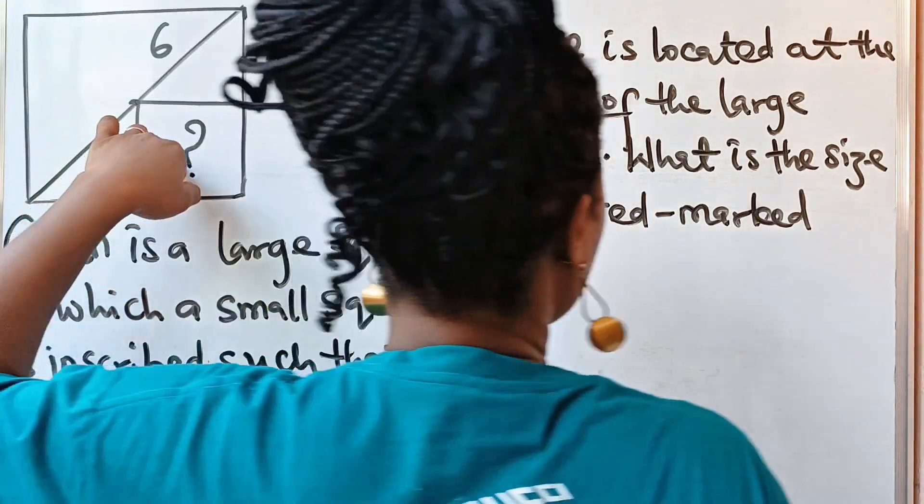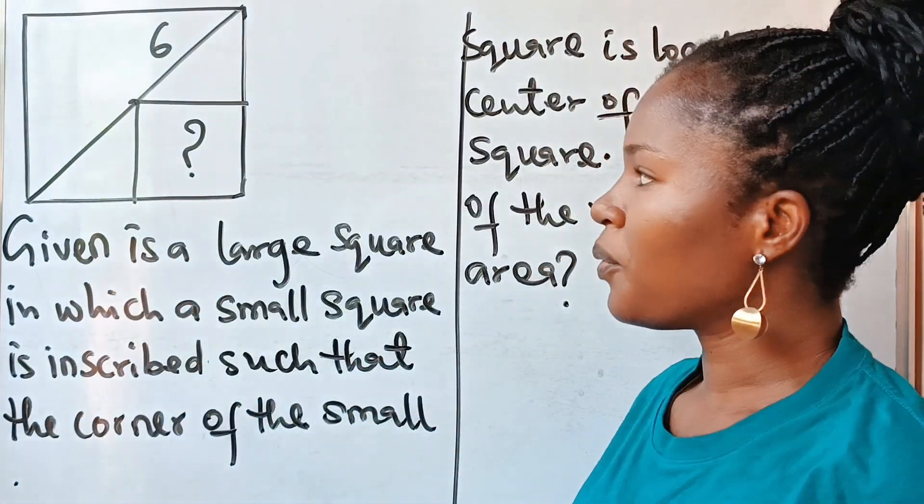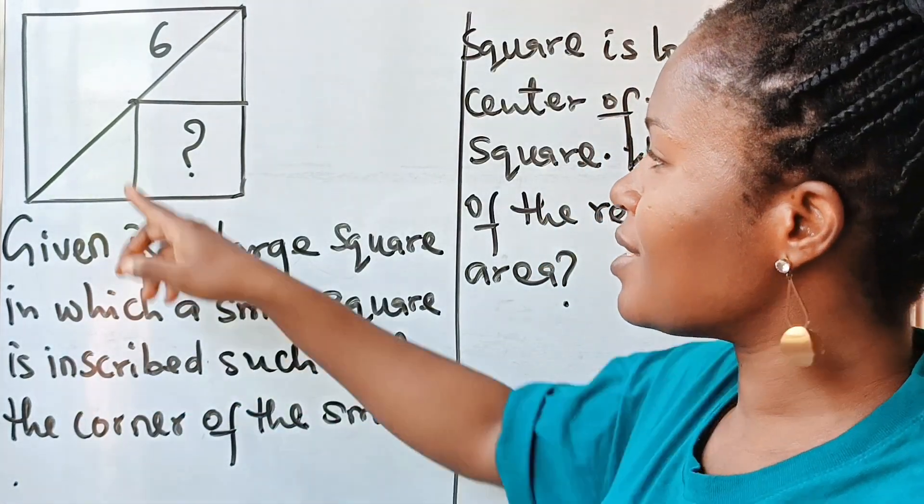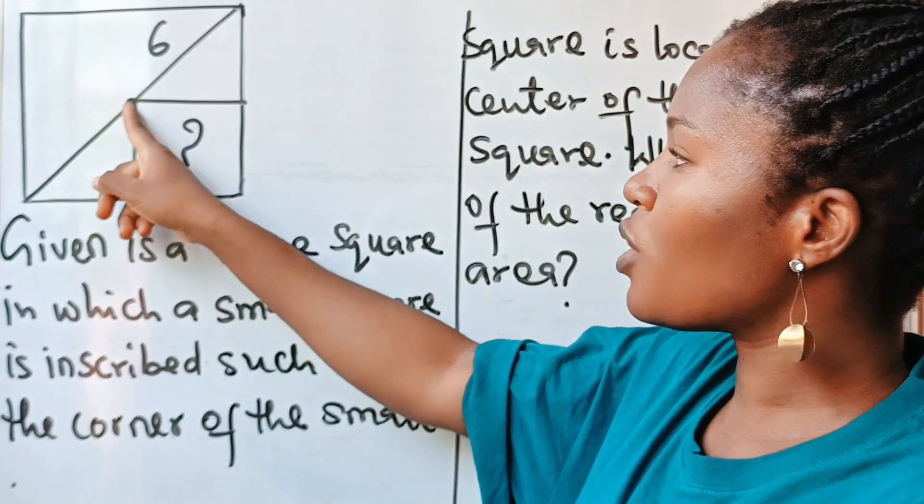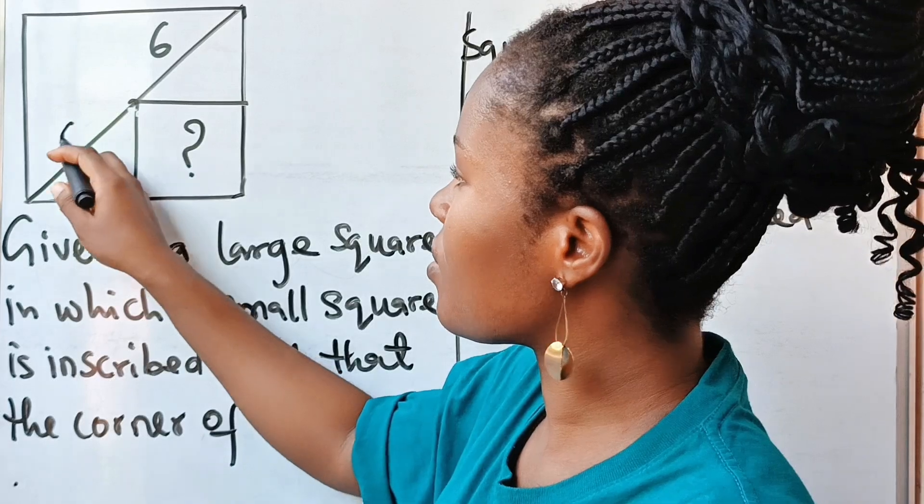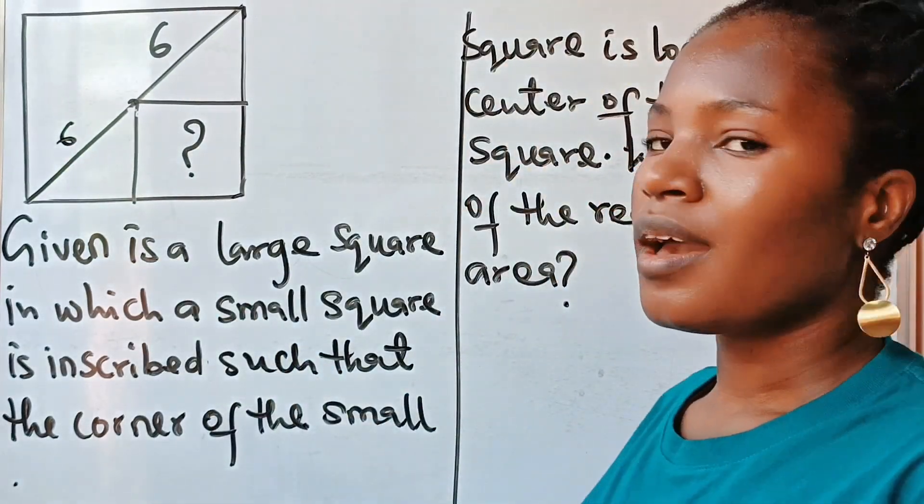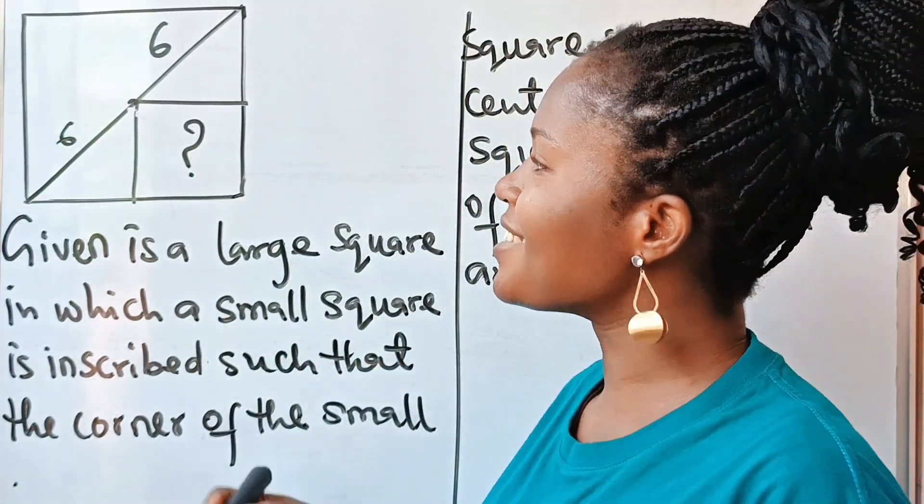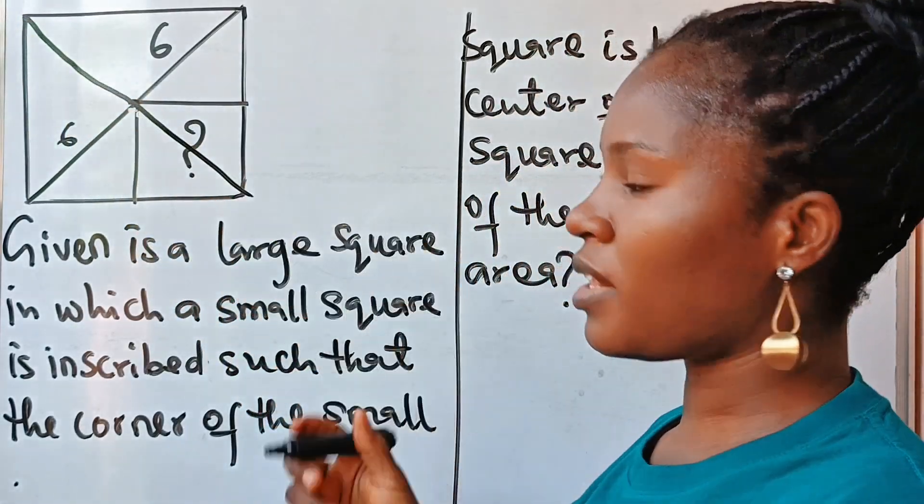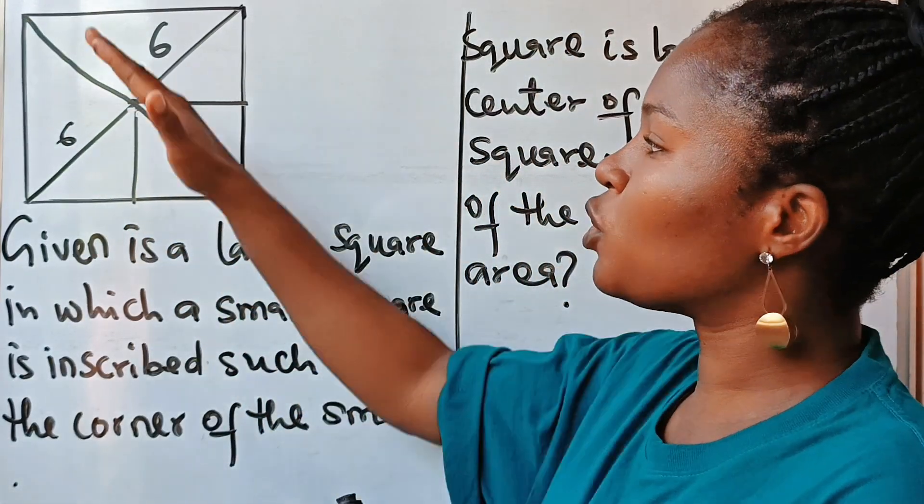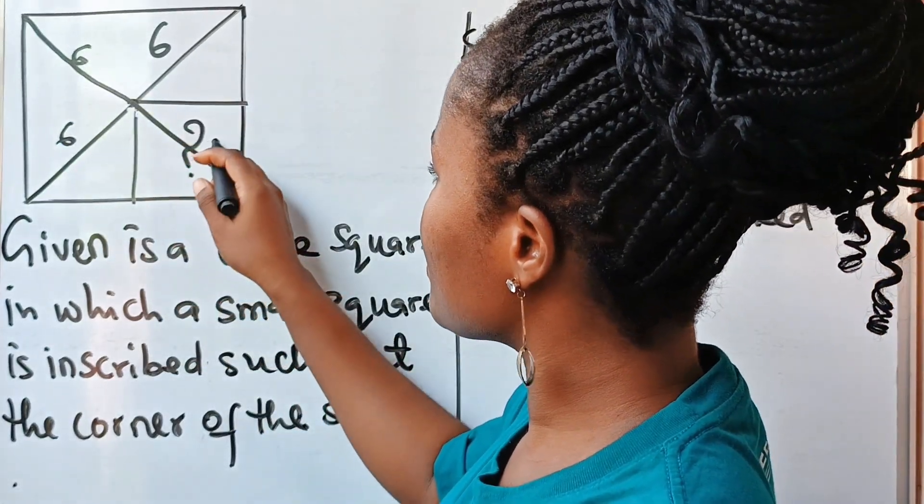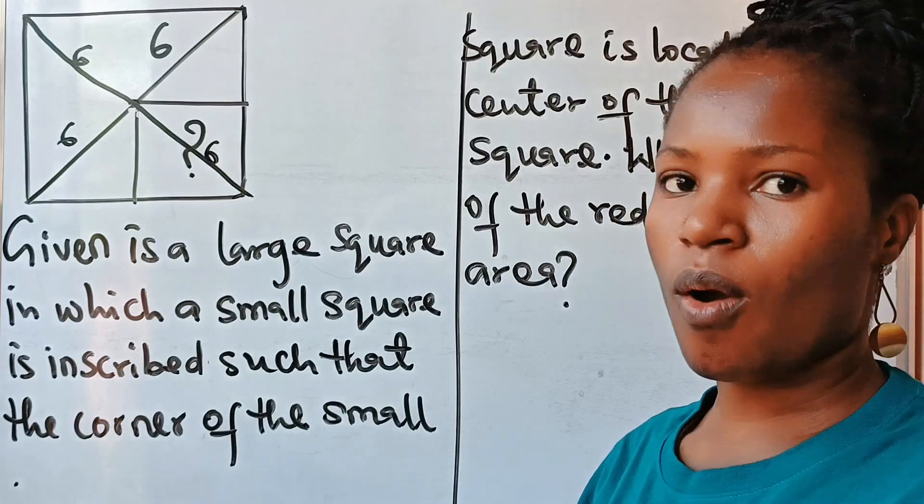Now this is how to go about it. First of all we are told that this is at the center, so it simply means that from here to here is also six. It also means that if we draw this line here like this, a straight line, if we draw that straight line then this place is six, that means this place is also six.